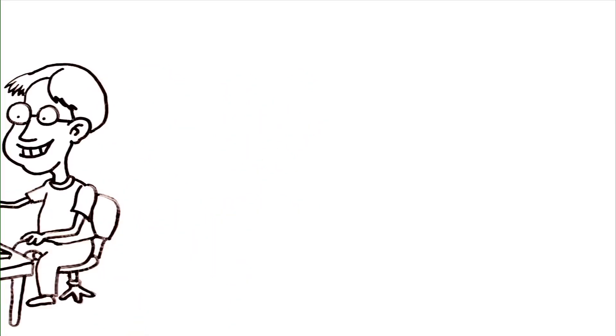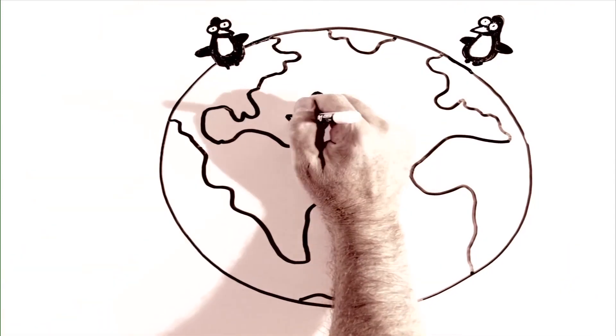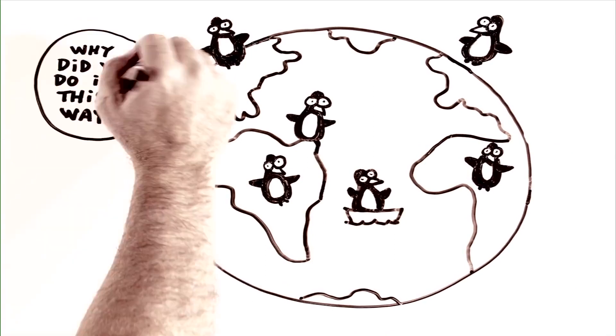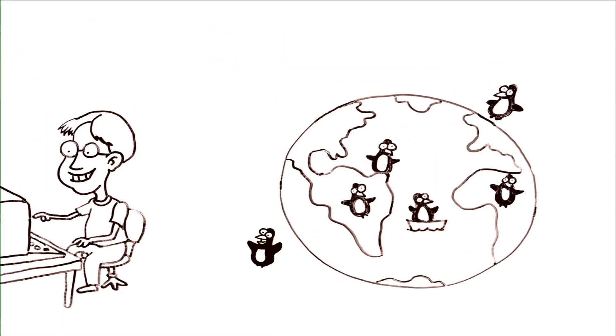Well, word of Linux open source project quickly spread around the globe and developers from all over contributed their code. Linus named his OS kernel Linux and chose a penguin as its mascot after a little incident at the zoo.